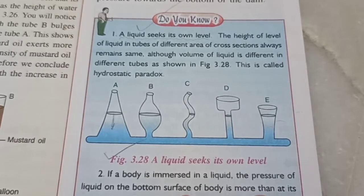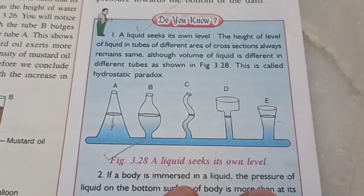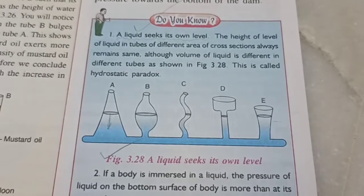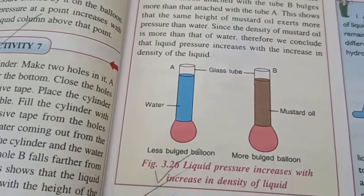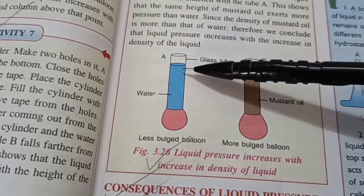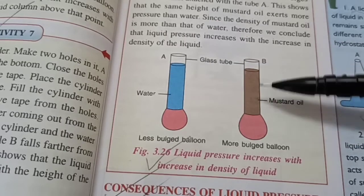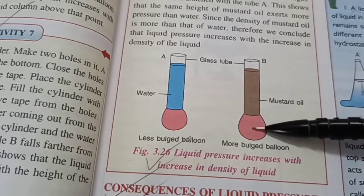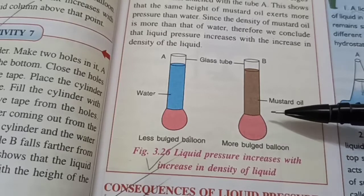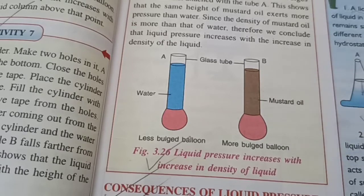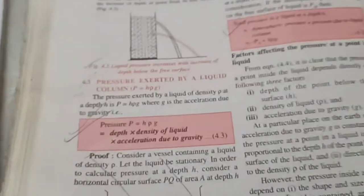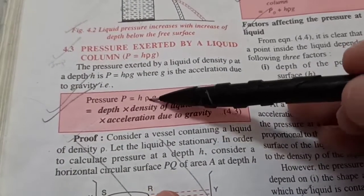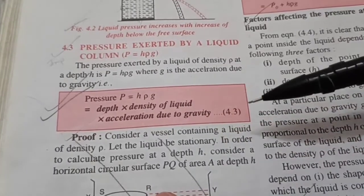And the third factor the pressure depends on is the density of the liquid. You see, denser a liquid, more is the liquid pressure, which can be demonstrated with this diagram. You can see here, even though the level of the liquid is same of water and mustard oil, here the balloon bulges more, which means there is a greater pressure on it. Why? That's because mustard oil is denser. So the formula is, pressure is equal to H rho g, where H is the depth, rho is the density of liquid, and g is acceleration due to gravity.